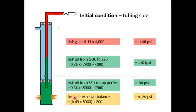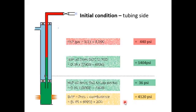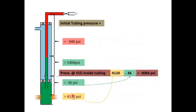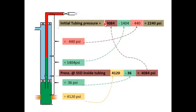We need 200 psi overbalance, so we must maintain bottom hole pressure at 4,120 psi. A common exam question is how much pressure needs to be maintained at SSD level. The pressure at the SSD inside the tubing is calculated by subtracting 36 psi from 4,120 psi: 4,120 − 36 = 4,084 psi. This pressure must be maintained constant during the circulation.